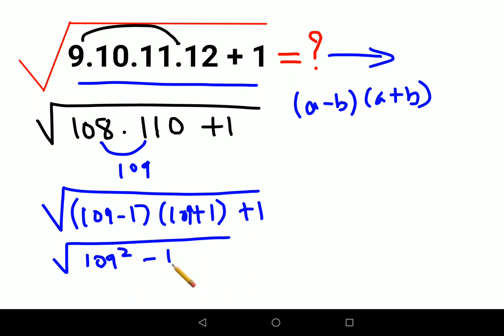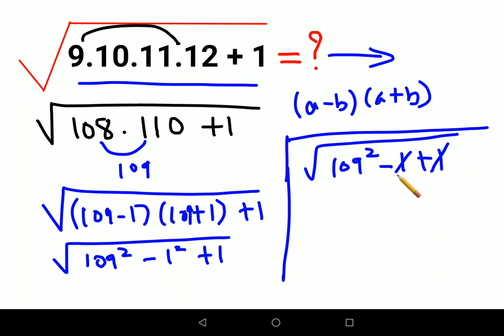This eventually becomes square root of 109 square minus 1 plus 1. This and this gets cancelled, you are left with 109 square. If you look closely, the square root and the square will get cancelled. So the final answer for this question is just 109.